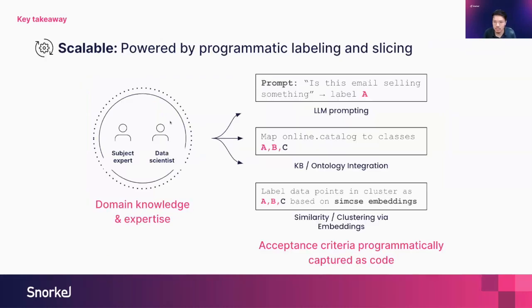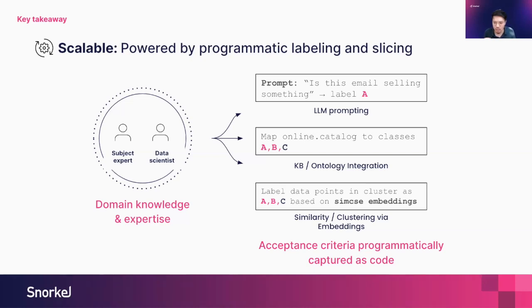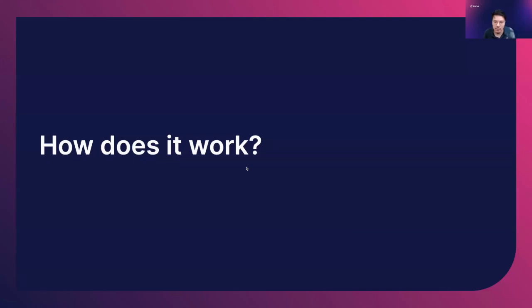The last pillar is all about building scalable evals. A lot of the technology we've built going back to our early days as a research project at Stanford comes into play here. The key idea is you want to take your domain knowledge and expertise — having your subject matter experts and data scientists sitting next to each other instead of in silos — and encode that into programmatic code artifacts. If we have a specific catalog of products, let's map that to different slices. If points in a cluster relate to friendly or positive responses, let's label that as an acceptable response.